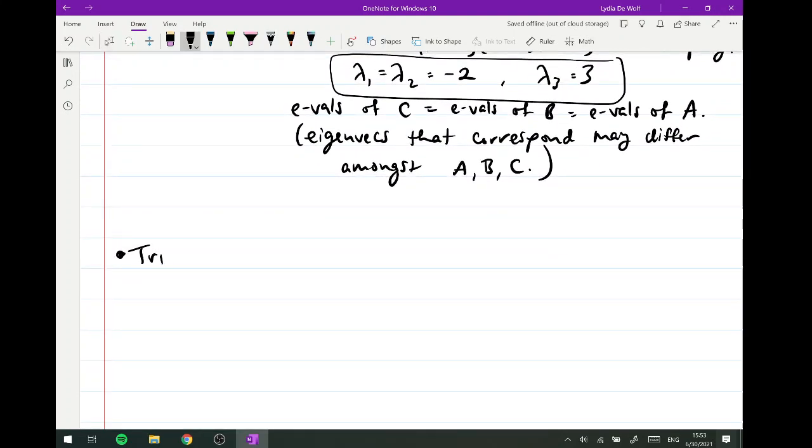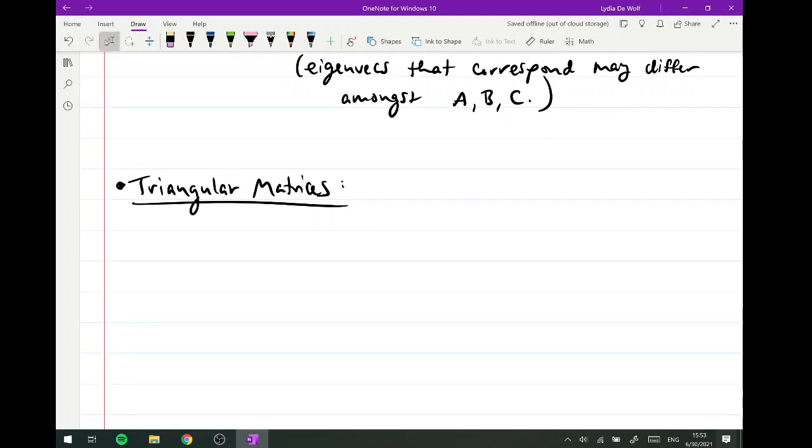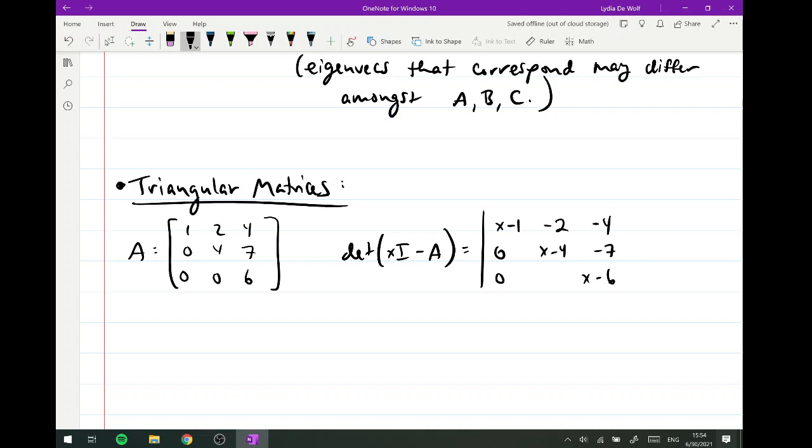Triangular matrices. Now let's just talk about this by looking at an example. Here's a triangular matrix. We would be looking at the determinant of X times I minus A in order to get our characteristic equation. So the determinant of the matrix, I'm going to look down the diagonal and do X minus. So X minus 1, X minus 4, X minus 6. And then all the other numbers in here are just going to get the sign flipped.